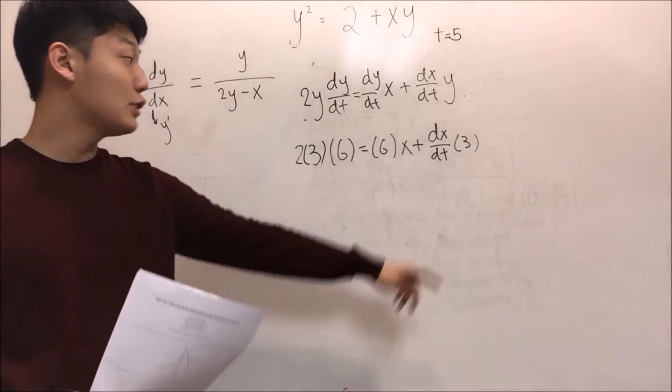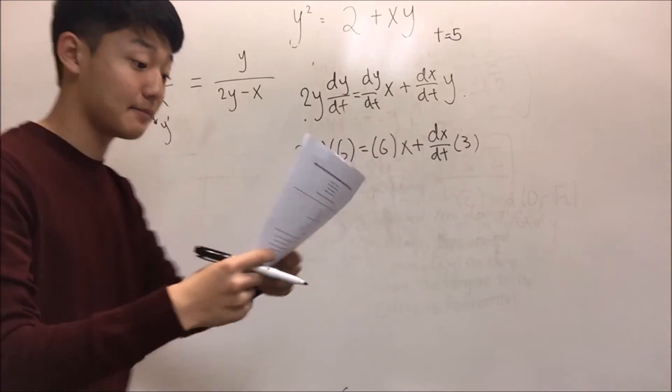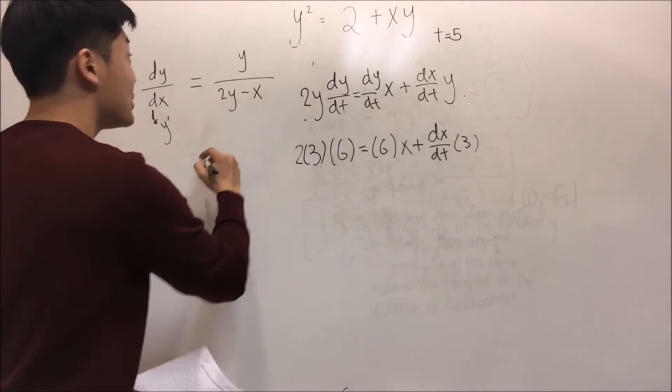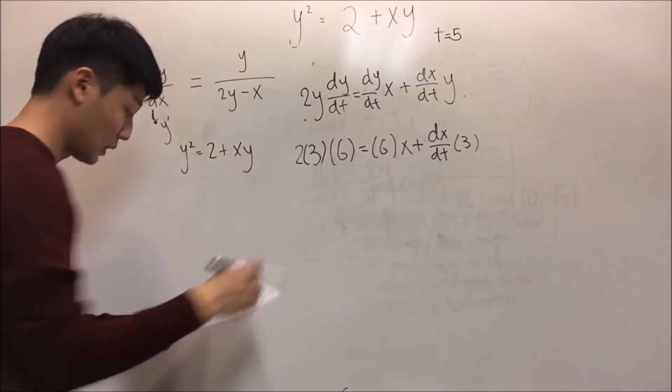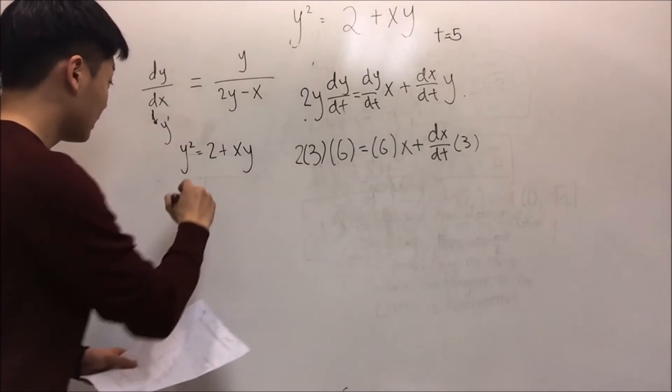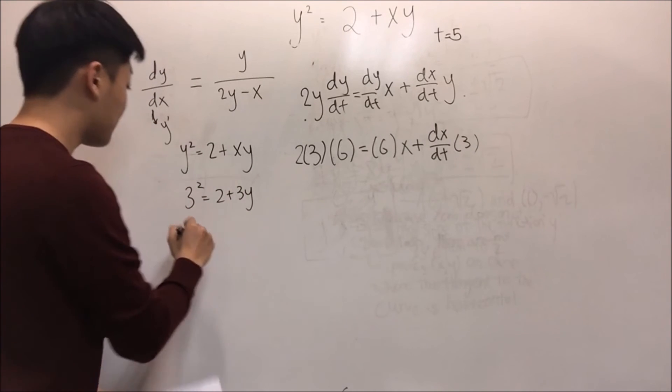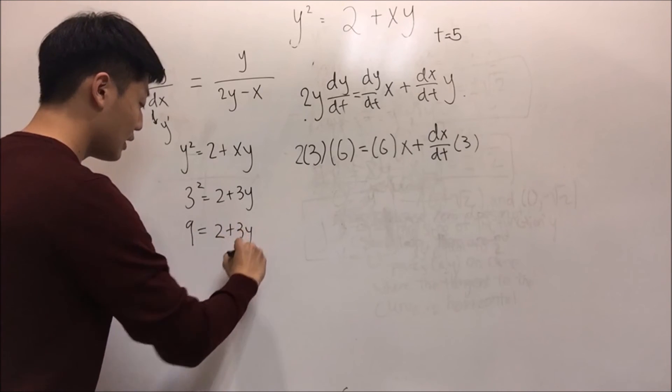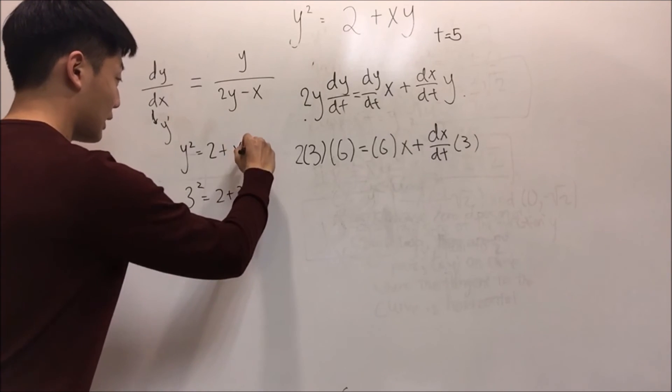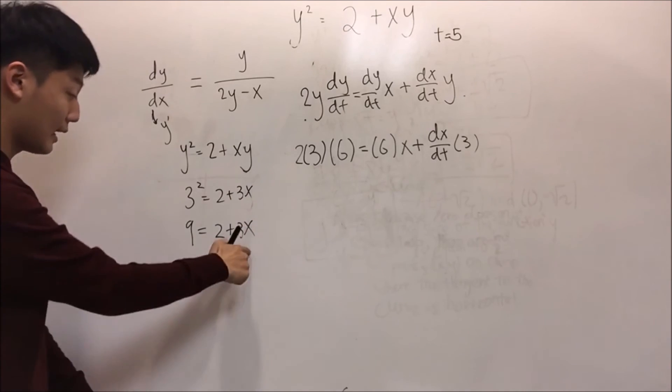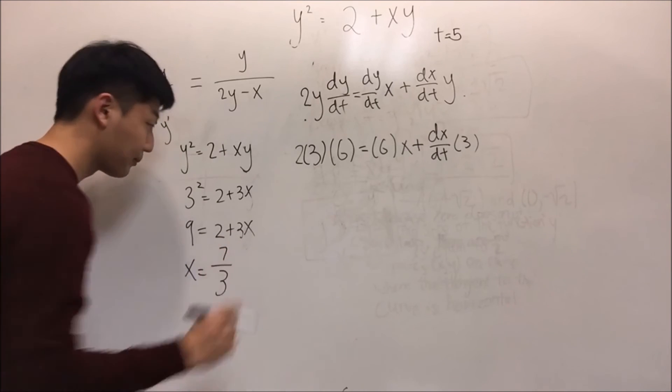When we look at this, we notice we do not know dx/dt. We have to solve for it, and we also do not know x. Let's solve for x. When t equals 5, let's use the original function, which is y squared equals 2 plus xy. Because at time t equals 5 the value of y is 3, we can plug 3 squared equals 2 plus 3x, which will become 9 equals 2 plus 3x. So x will become 7 over 3.